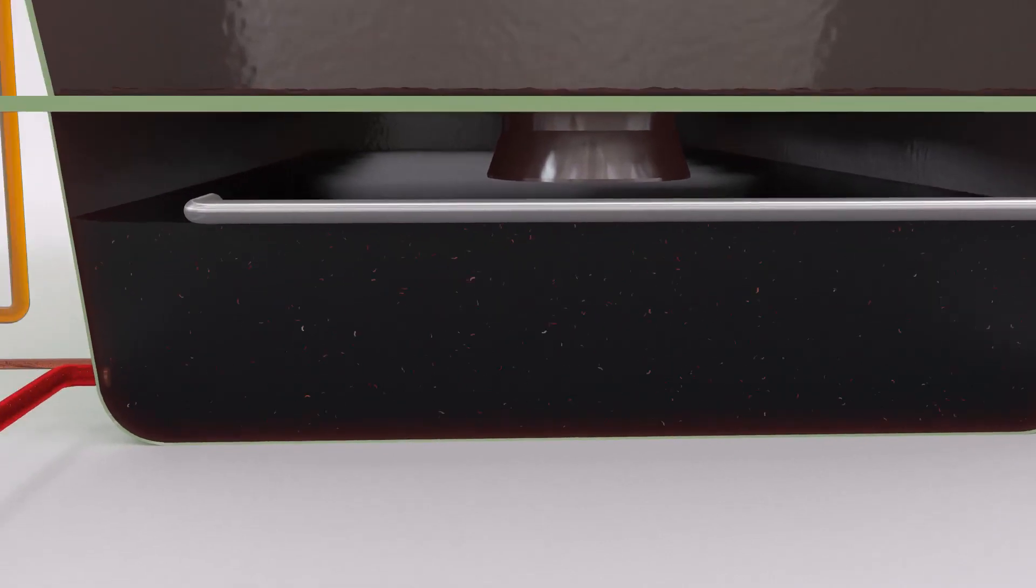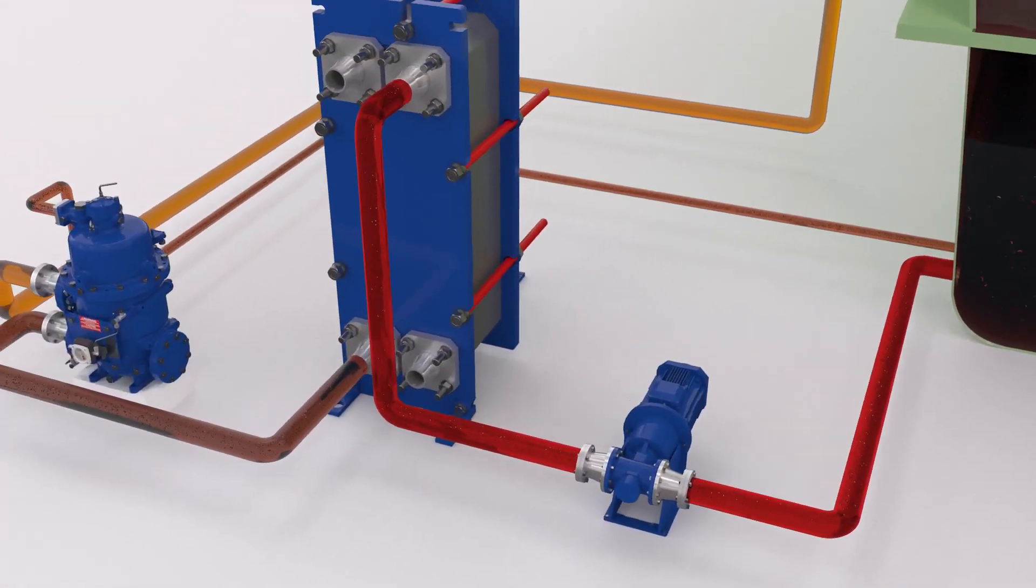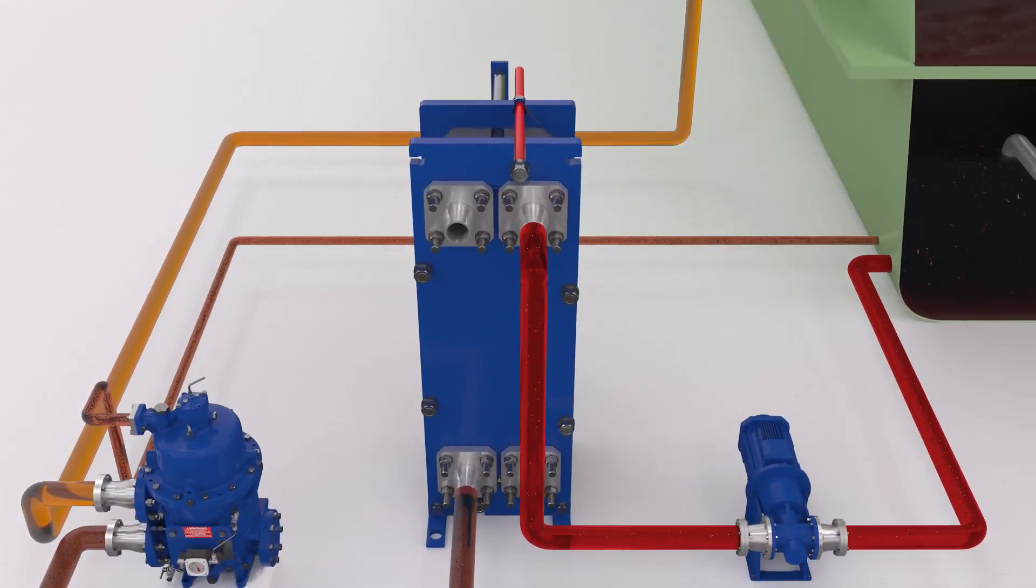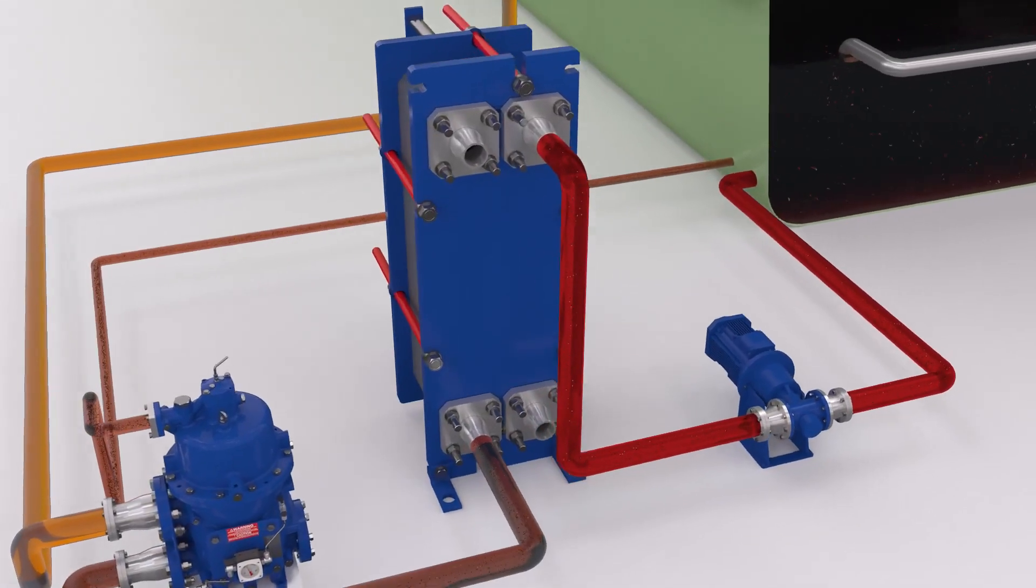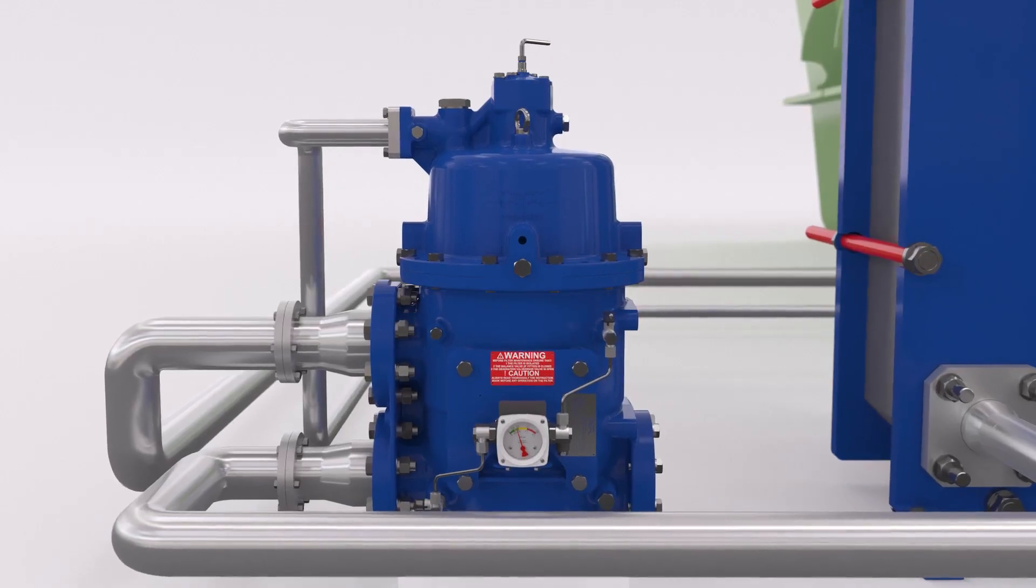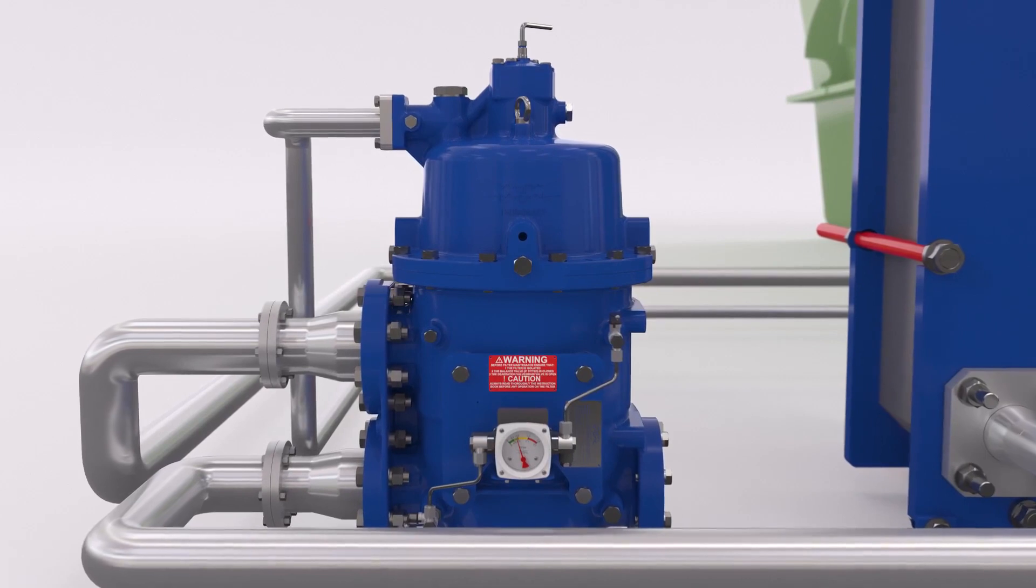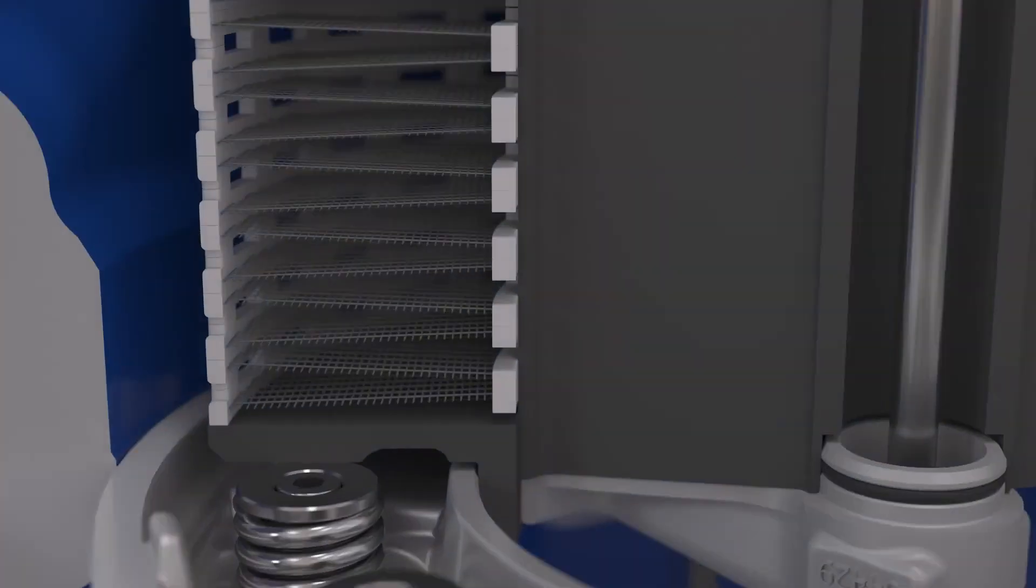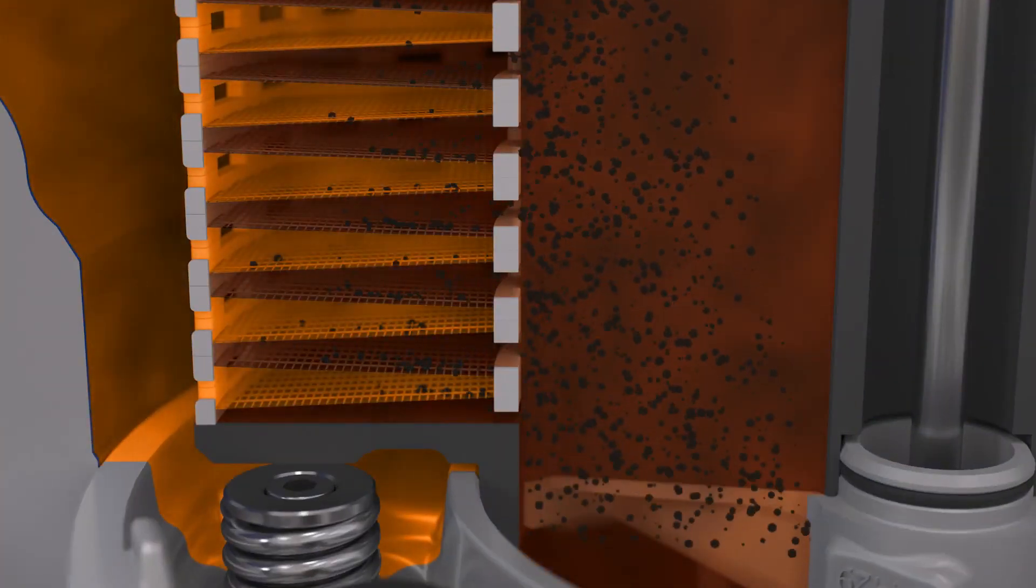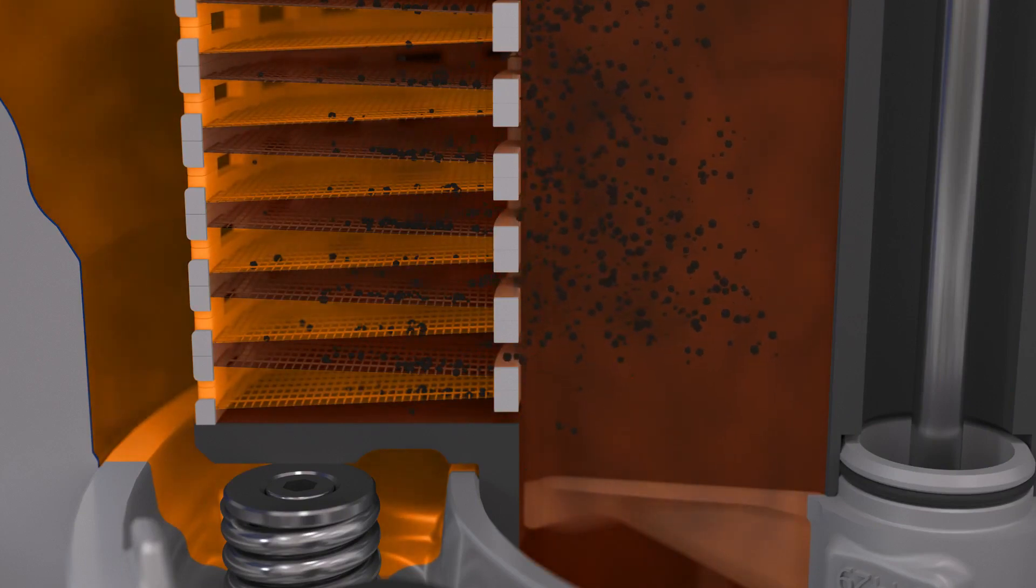It's then pumped through an Alpha Laval heat exchanger to cool the oil before it reaches the Alpha Laval Moati filter. The Moati filter's primary function is to protect the engine. The lubrication oil passes through a fine mesh where harmful particles are trapped.